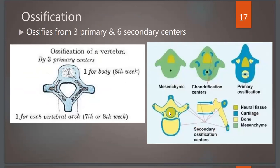Now for ossification of the typical cervical vertebra: it ossifies from three primary and six secondary centers. The three primary centers include one for the body, which appears during the 8th week, and one for each vertebral arch, which appears during the 7th or 8th week of intrauterine life. Secondary ossification centers appear after birth as we grow.